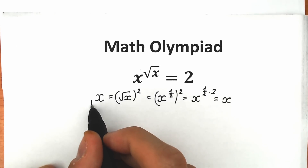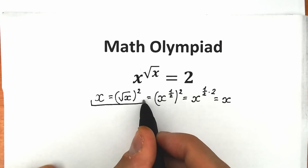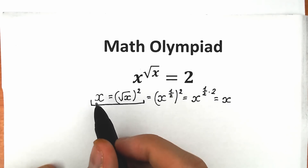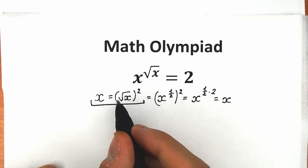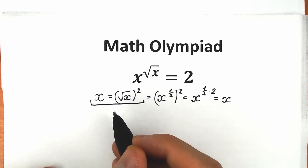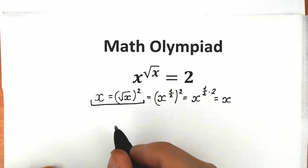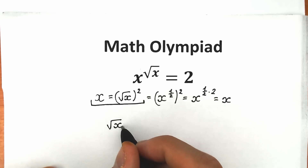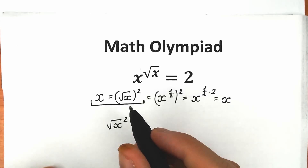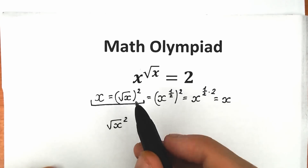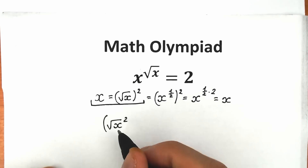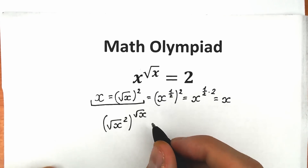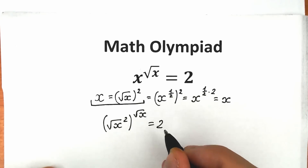What we need is that expression: x equals square root of x to the second power. Now, instead of x in the original equation, let's plug in square root of x squared. So we have square root of x to the second power, raised to the power square root of x, equal to 2.